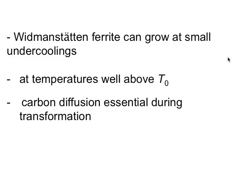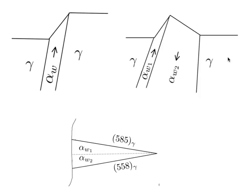Let's look at the shape change in a little bit more detail. The diagram on the left is what you would expect if there is a single plate of Widmanstätten ferrite forming — you get a single tilt of the surface and on either side the surface remains flat. But suppose that you have two plates forming simultaneously: then you wouldn't see just a step but you would see a sort of tent-shaped surface relief.